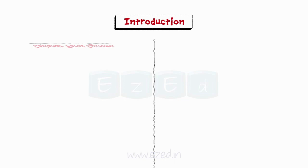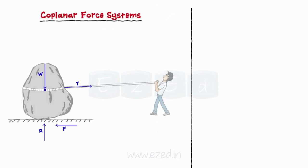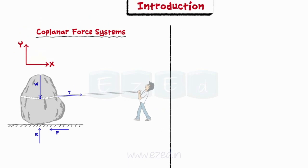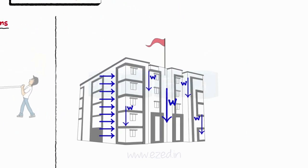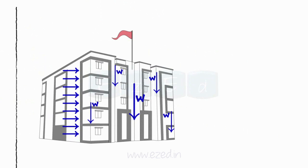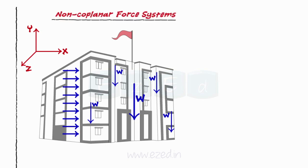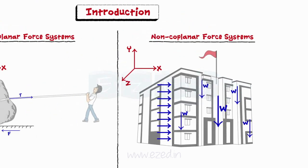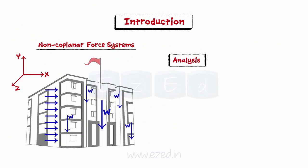Previously, we have learned about coplanar force systems — that is, resultant and moments applied in a two-dimensional system along the x-axis and y-axis only. But in most real-life problems and engineering applications, three-dimensional force systems are involved; that is, all structures, machines and members are subjected to forces along x-axis, y-axis and z-axis. Such systems are called non-coplanar force systems or space forces. The analysis of forces in space, three-dimensional, is done using the vector method.